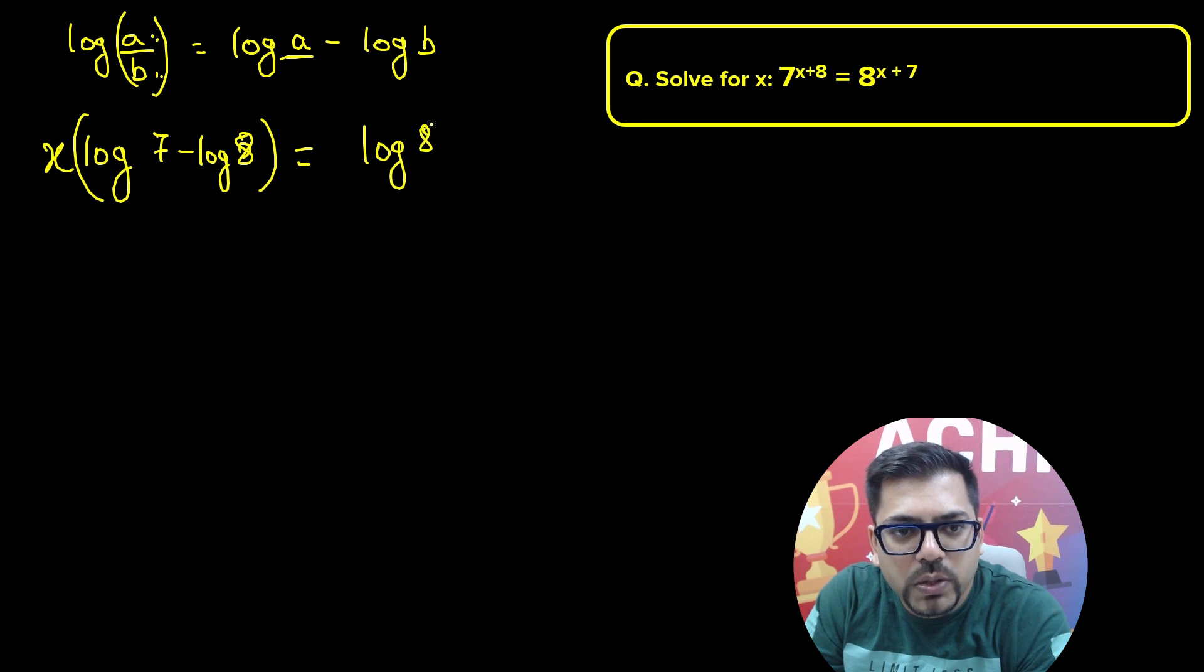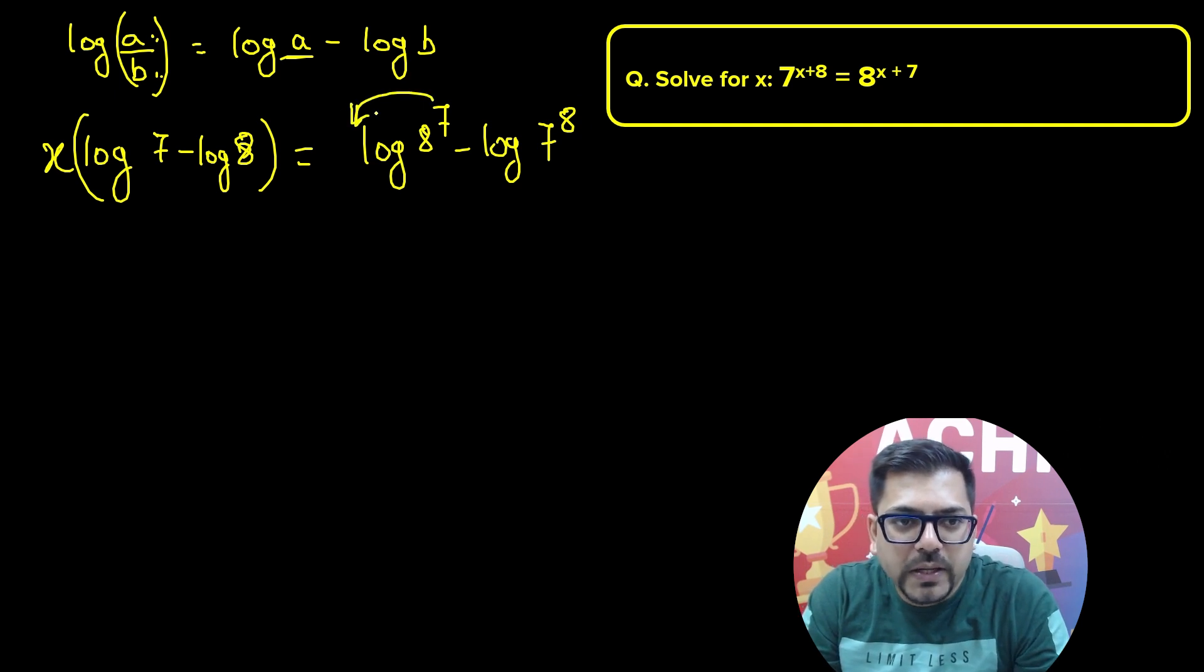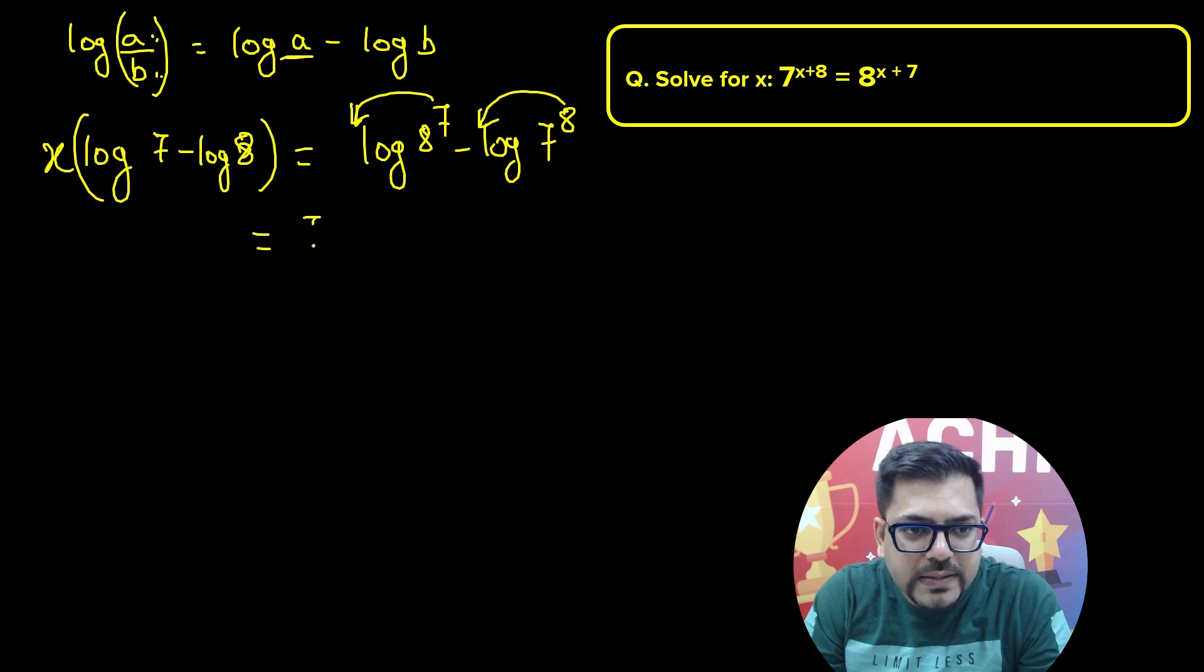So I'll write log 8 to the power 7 minus log 7 to the power 8. Now this power will come in the multiplication. So I'll write finally as 7 log 8 minus 8 log 7, and here we have x times log 7 minus log 8.